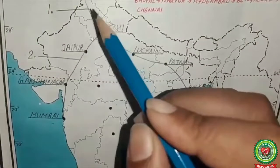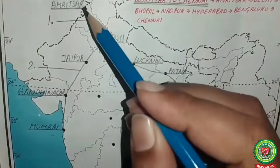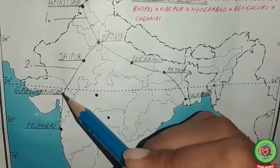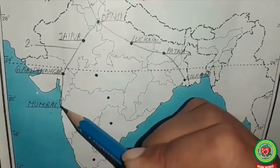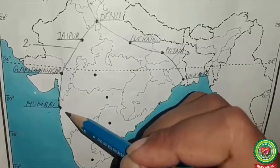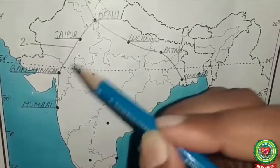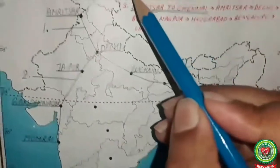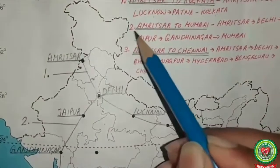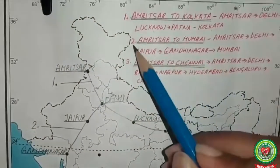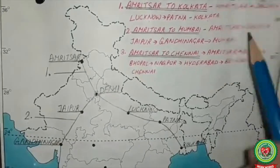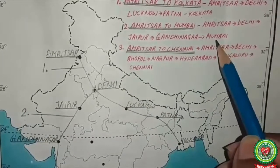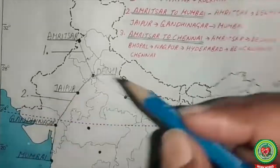So from Amritsar to Mumbai, follow this route: Amritsar to Delhi, Delhi to Jaipur, Jaipur to Gandhinagar, and Gandhinagar to Mumbai. Mumbai is the capital of Maharashtra, Gandhinagar is the capital of Gujarat, and Jaipur is the capital of Rajasthan. Write it as: second route — Amritsar, Delhi, Jaipur, Gandhinagar, Mumbai.